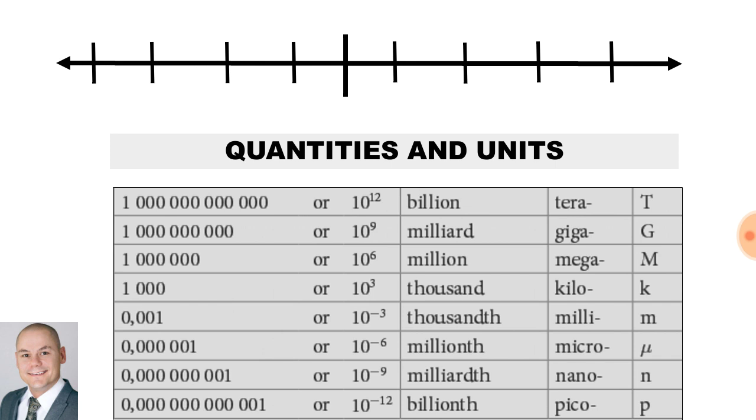To understand the quantities and units used in engineering science, here we have a number line. Everything to the left of the number line is positive and everything to the right of the number line is negative.